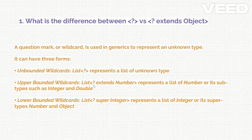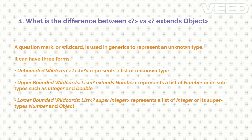With upper bounded wildcards, anything that extends Number can be put into the list — Number itself, or its subtypes like Integer and Double. Lower bounded wildcards use the 'super' keyword, so '? super Integer' means the list can hold Integer or its super types like Number and Object.